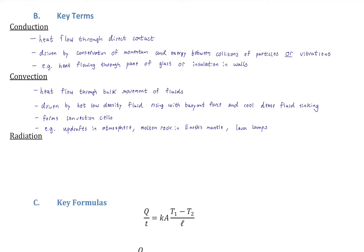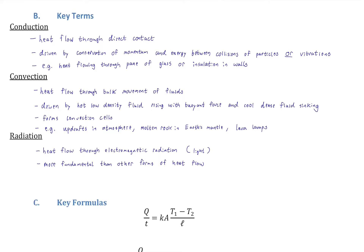The third mechanism is radiation — heat flowing through electromagnetic radiation, or light. Heat is energy (in joules), and since light can warm things up, it must be a means of heat flow. It's called radiation because light is radiation, and it is more fundamental than conduction or convection.